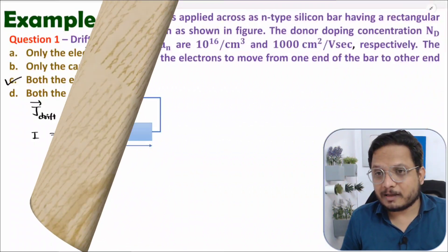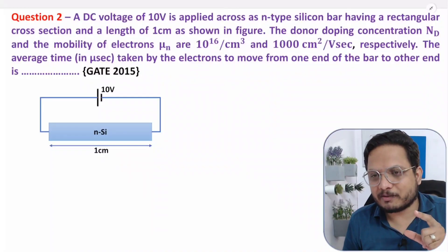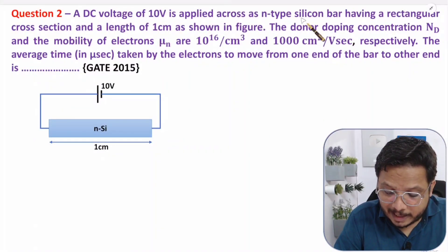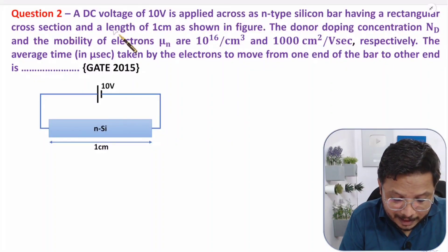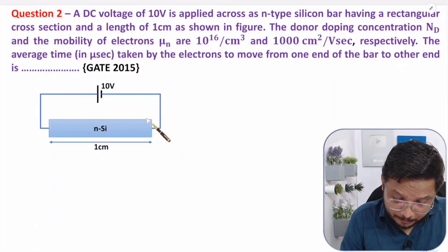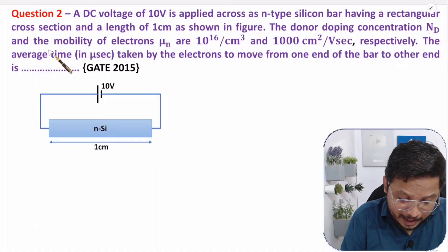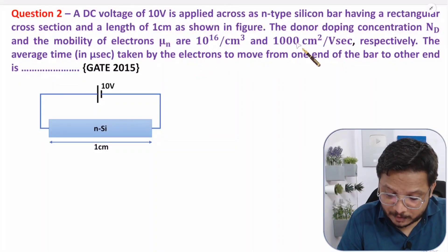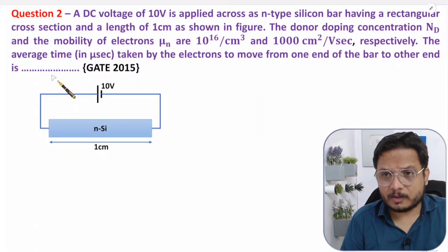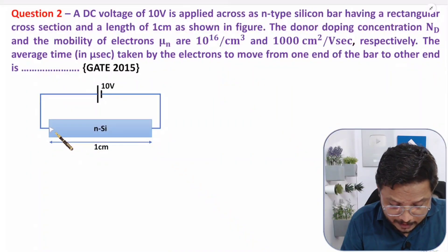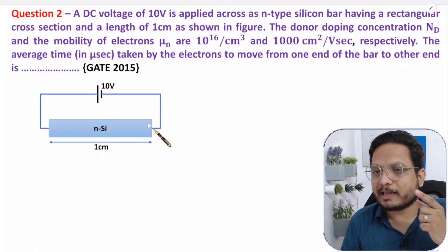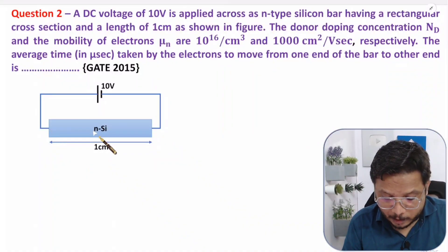Let us move on to the second question. A DC voltage of 10 volts is applied across an N-type silicon bar having a rectangular cross section and length of 1 centimeter. The donor doping concentration ND and mobility of electrons μN are given. We need to find the average time taken by electrons to move from one end of the bar to the other. For this, we need to find drift velocity first.